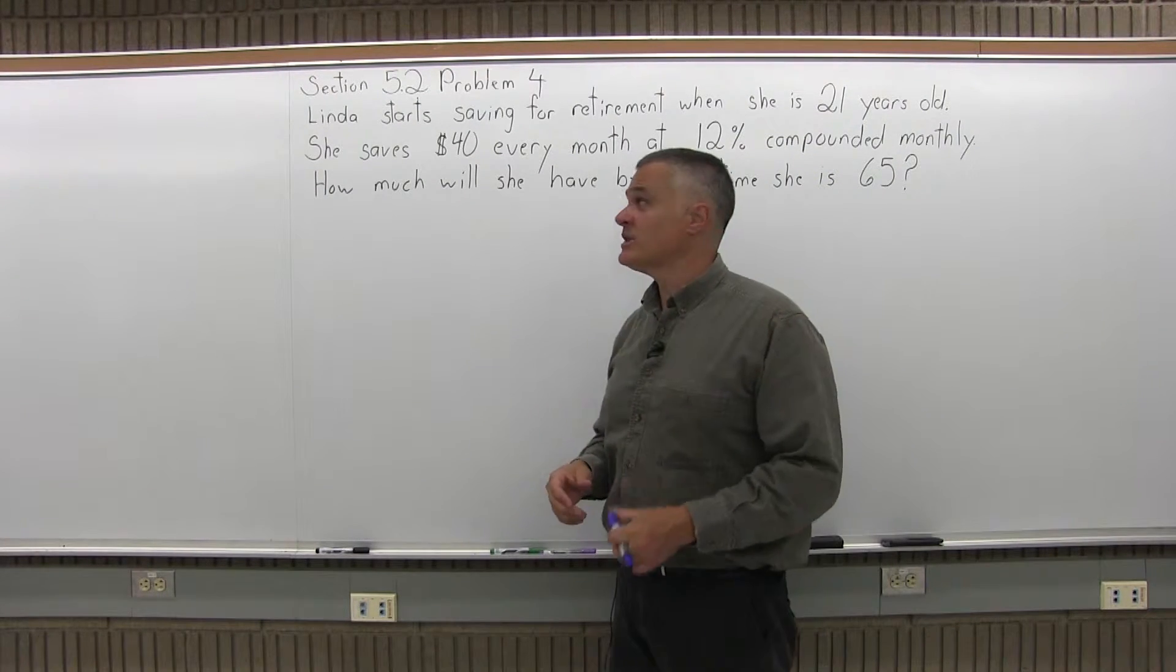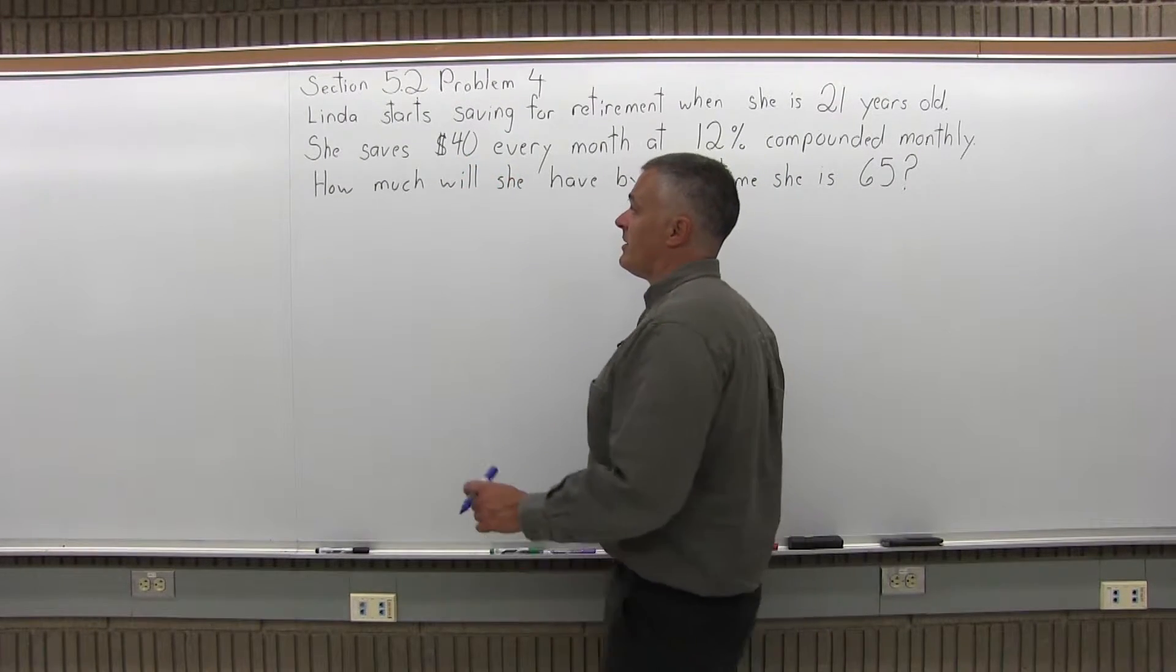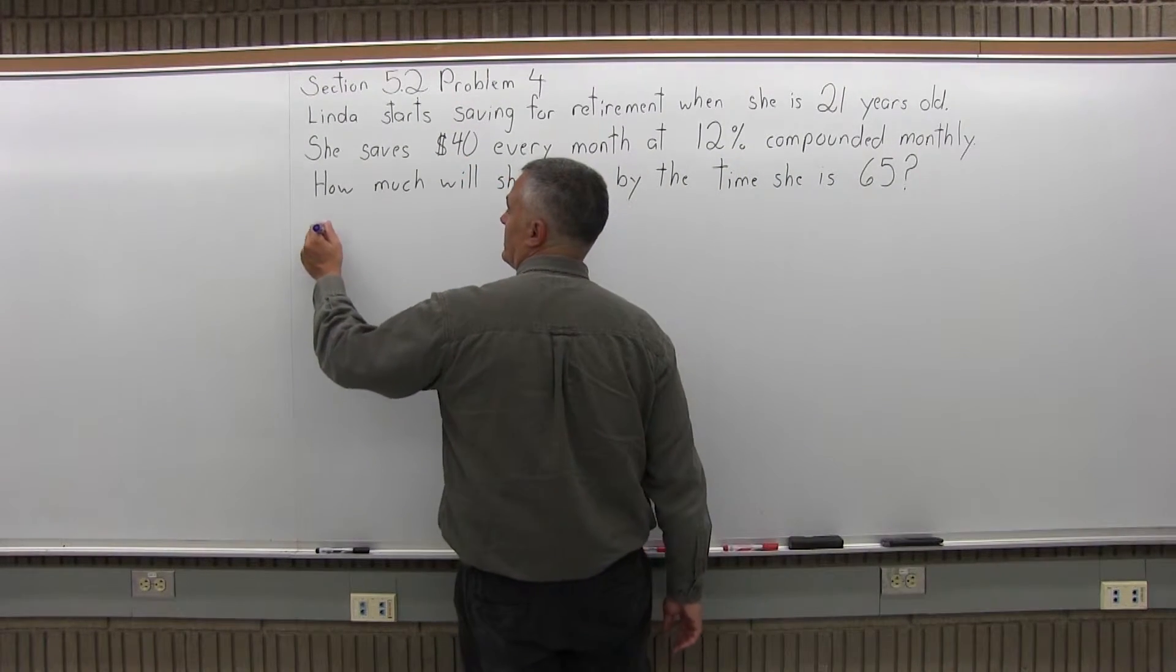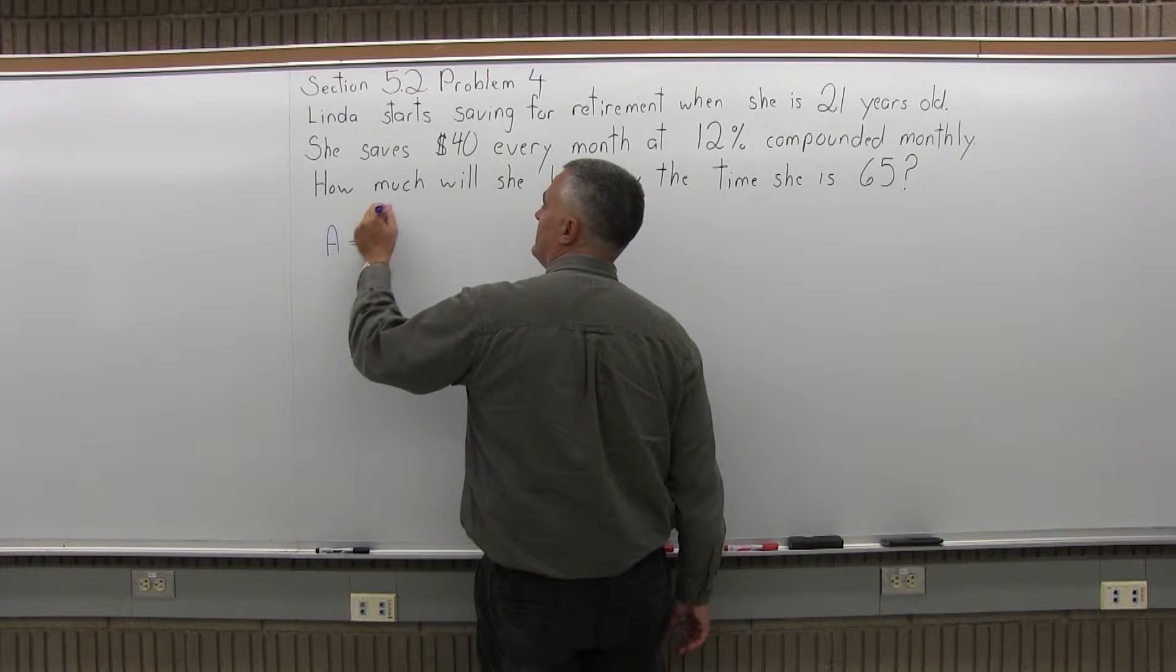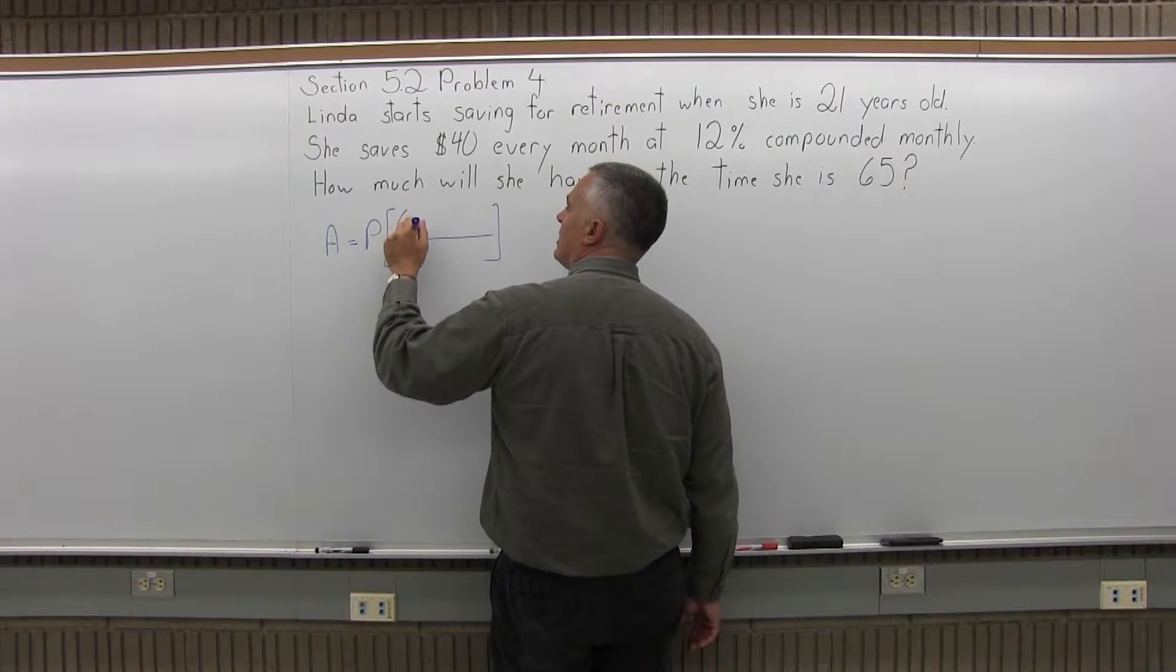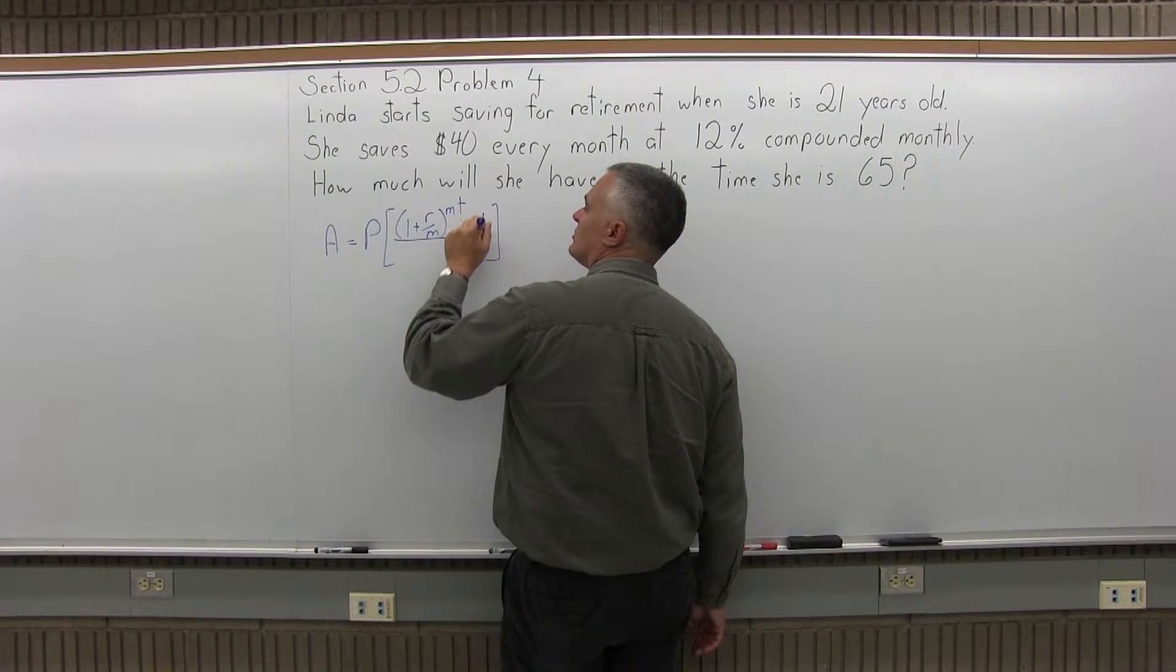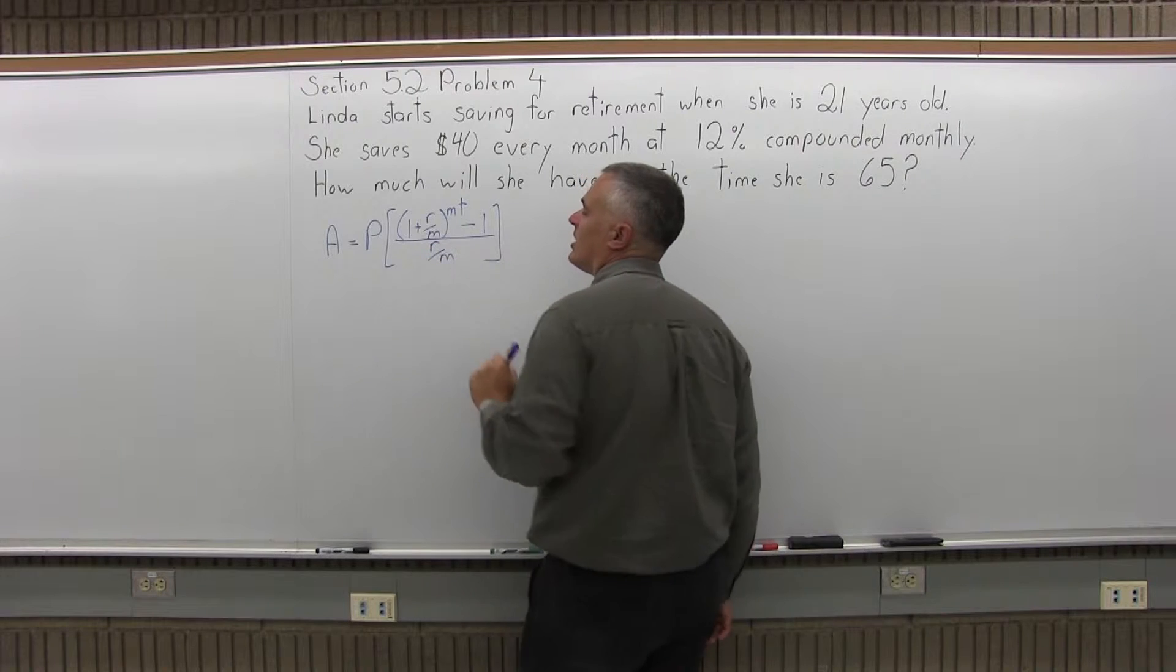First of all, this is an annuity question because we know how much we're saving and we calculate the end amount. The annuity formula is A equals P times some brackets. In the brackets we have 1 plus R over M to the M times T. There's a minus 1 after that and an R over M in the denominator.